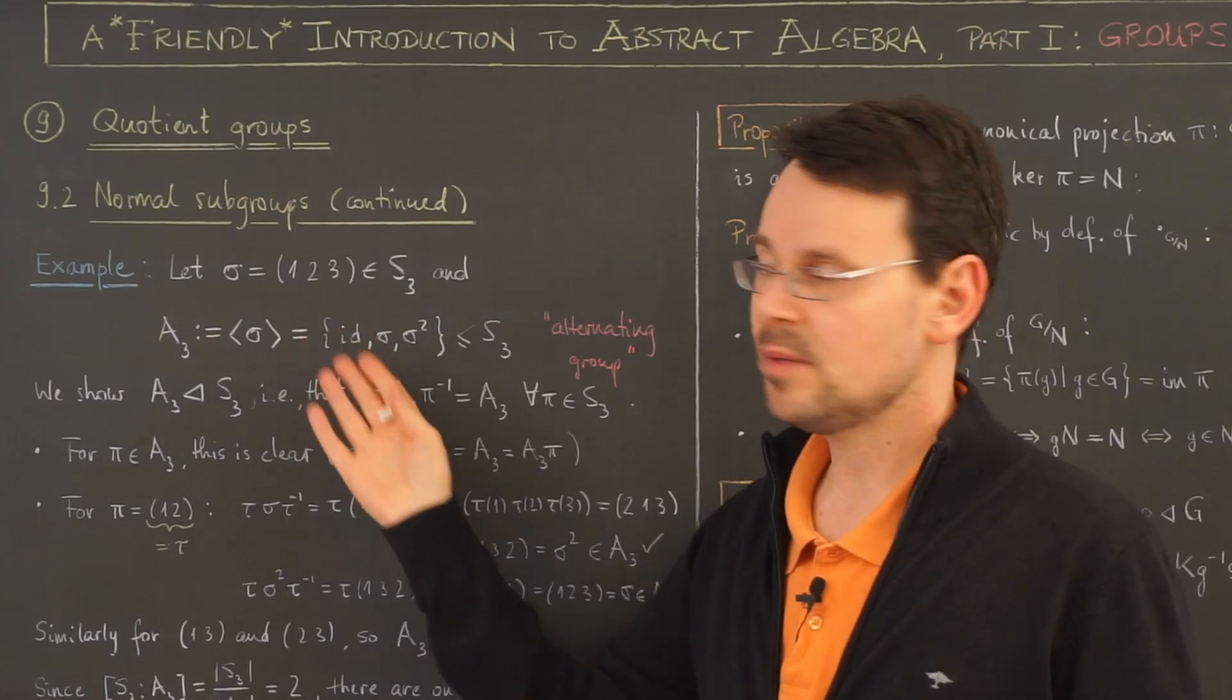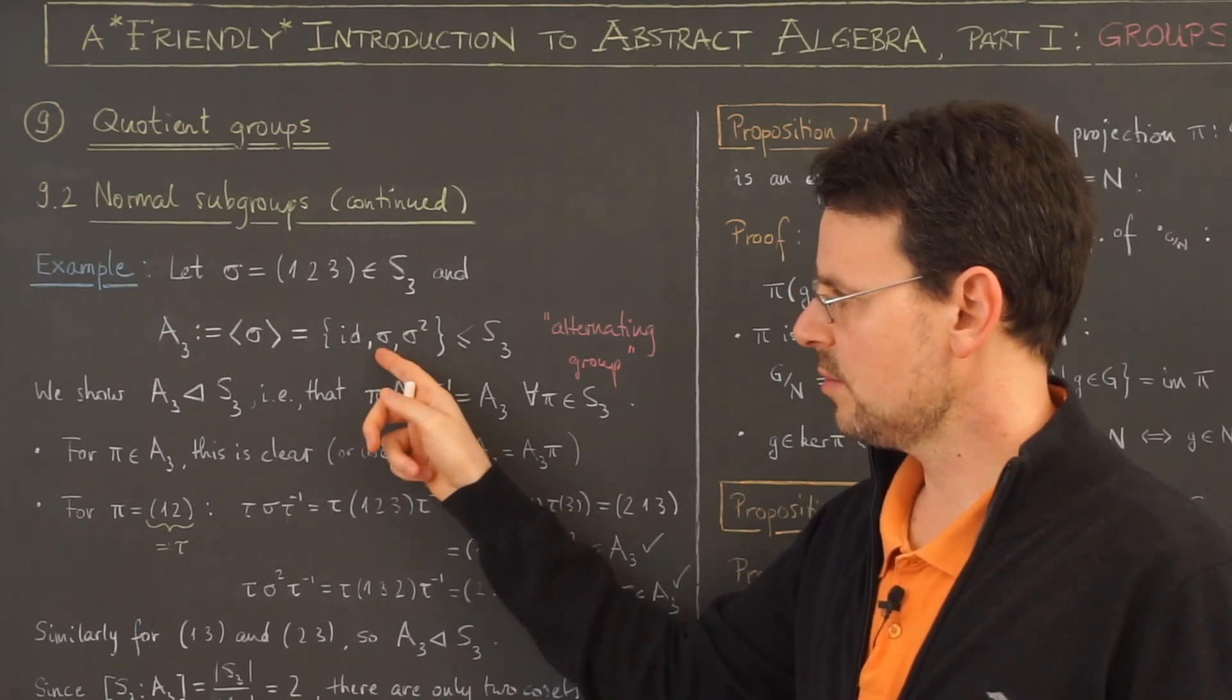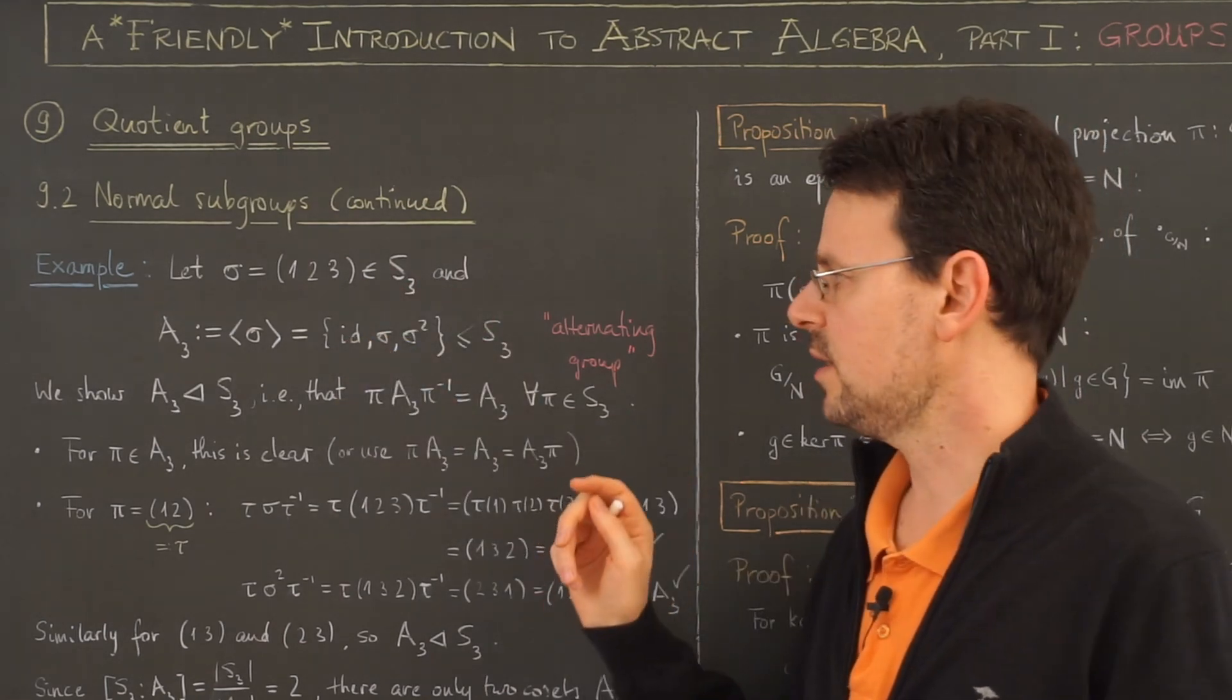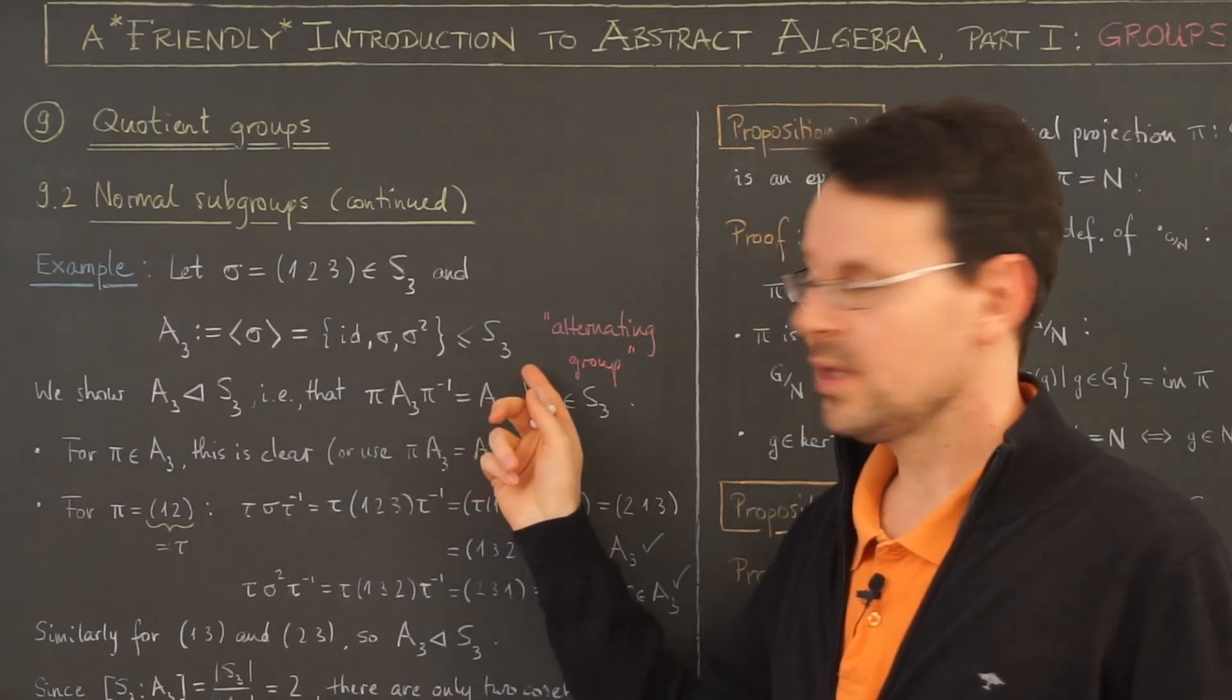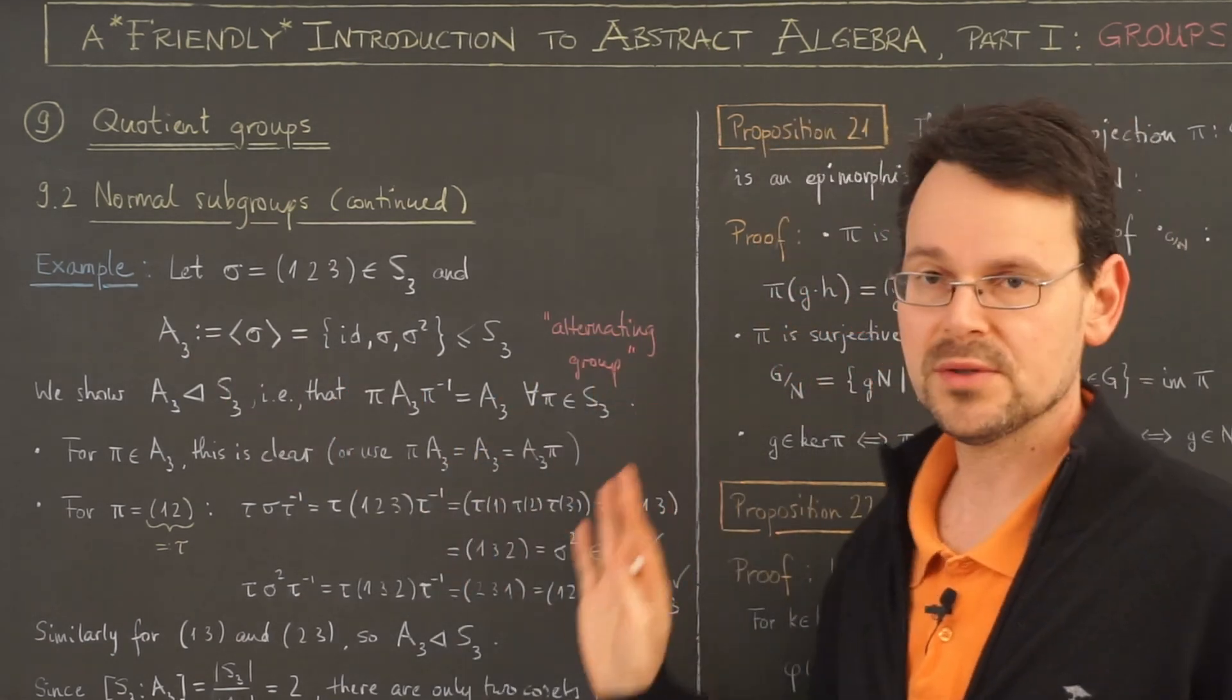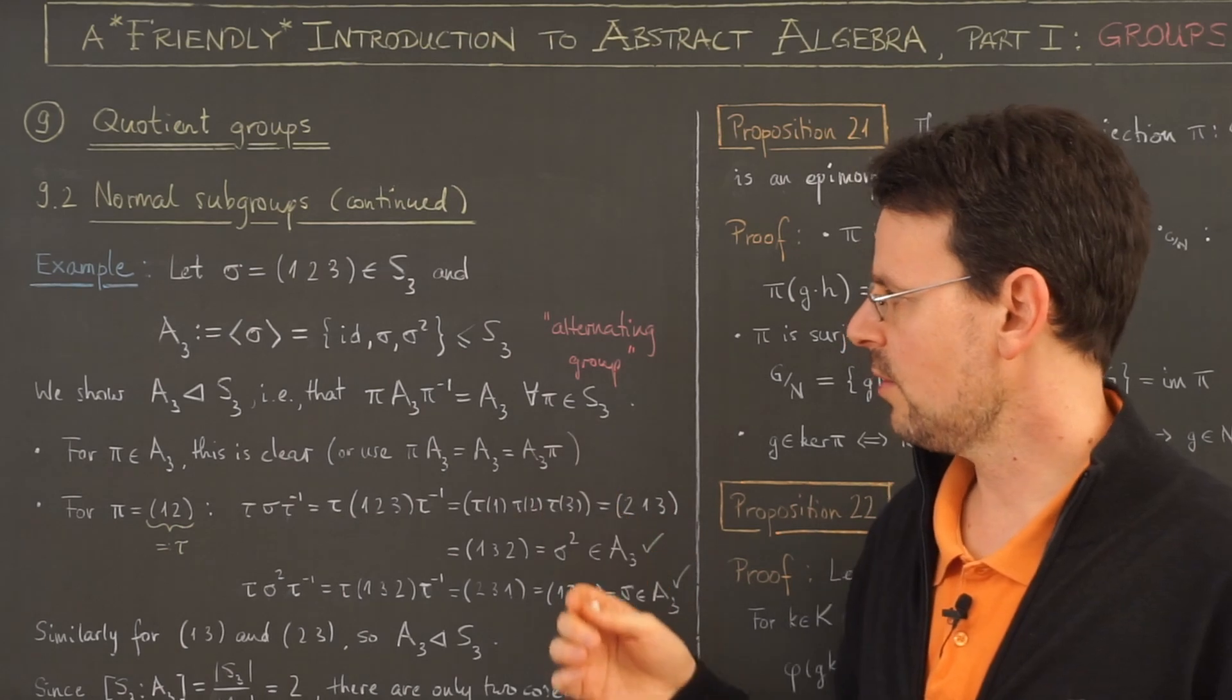Clearly sigma is of order 3, and the subgroup generated by sigma consists of sigma itself, sigma squared, and sigma to the third power which is the identity. This is a subgroup of S3 of order 3 which is called the alternating group, a name that is not clear yet. It will become clear when we talk about the signum of a permutation later on.